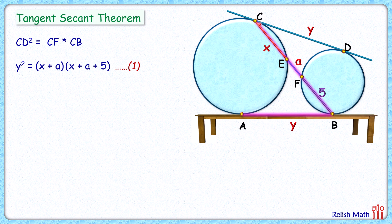Applying the tangent-secant theorem, we get BA squared is BE times BC. BA squared is y squared, BE is 5 plus a, and BC is 5 plus a plus x. Let's call it observation number two.